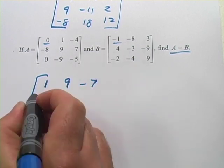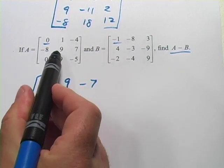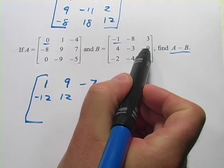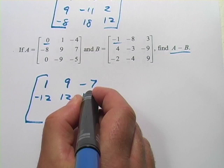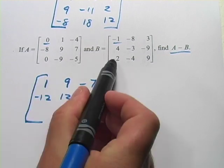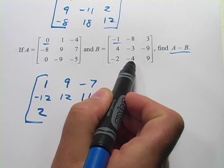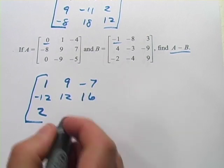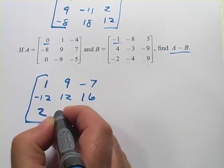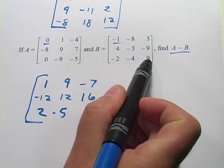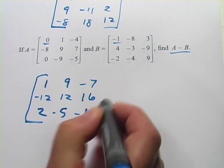Negative 8 minus 4 would be negative 12, 9 minus negative 3 would be positive 12, 7 minus negative 9 would be positive 16, 0 minus negative 2, positive 2, negative 9 minus negative 4 would be 5, and negative 5 minus 9 would be negative 14.